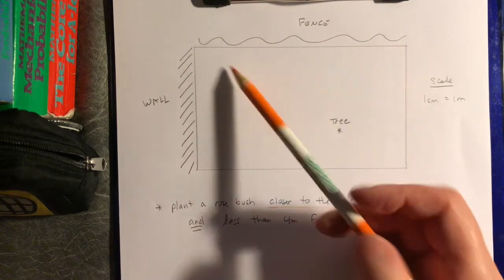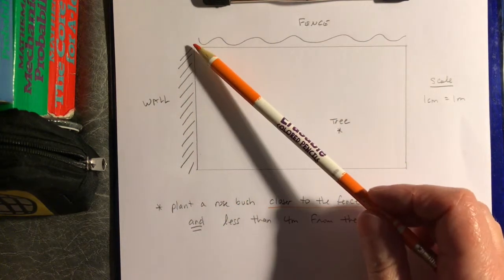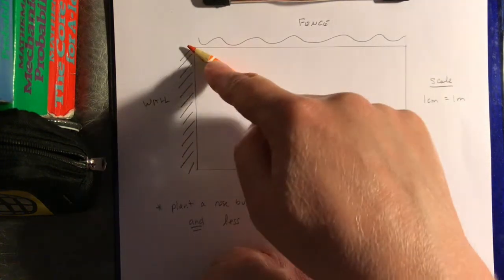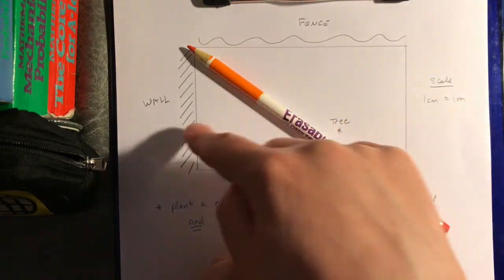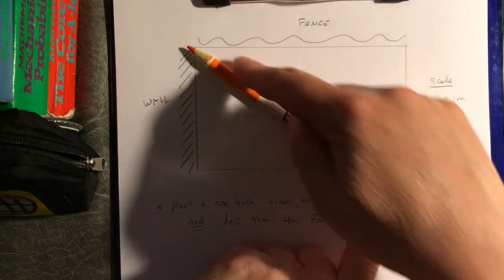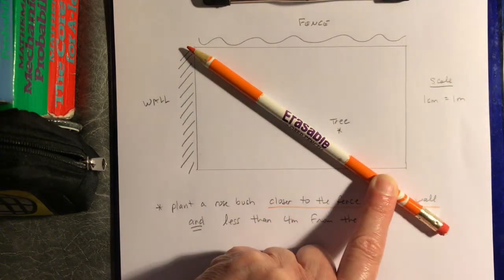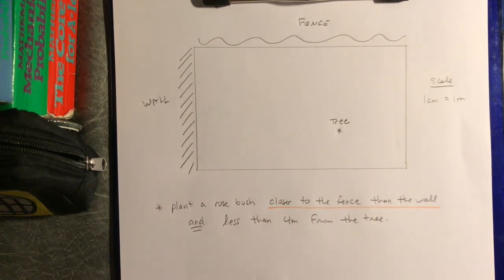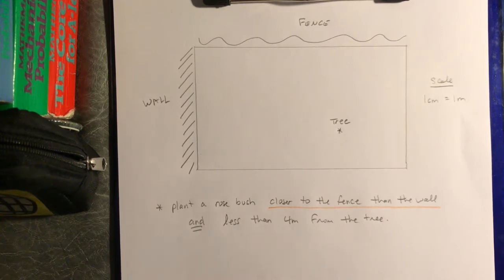So we'll start with being closer to the fence than the wall. Here's my fence, here's my wall. This is an angle bisector question. If I figure out the angle bisector, that tells me every point on this line is equidistant — an equal distance — from the fence and the wall. If I want to be closer to the fence, I want to be on the fence side. It's really tempting to just eyeball it, but you have to show your construction marks or you won't get credit.